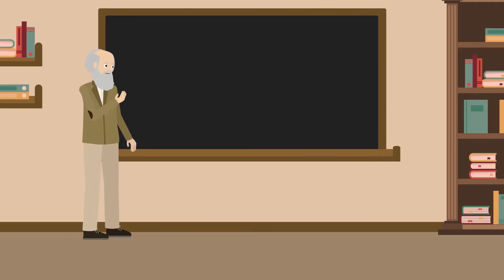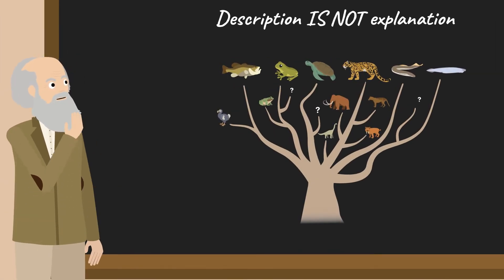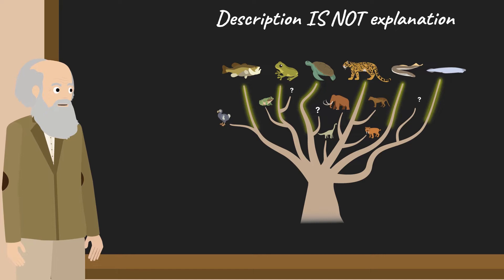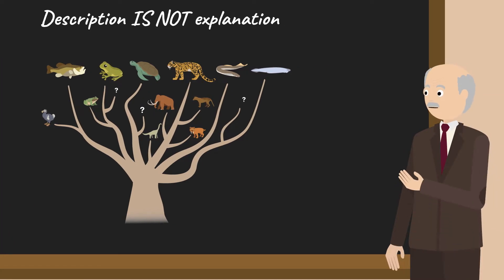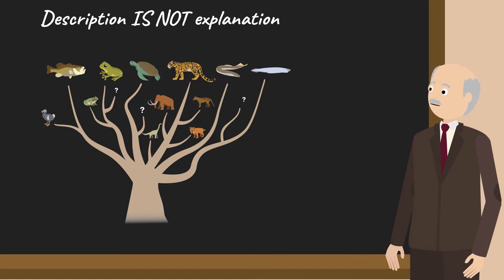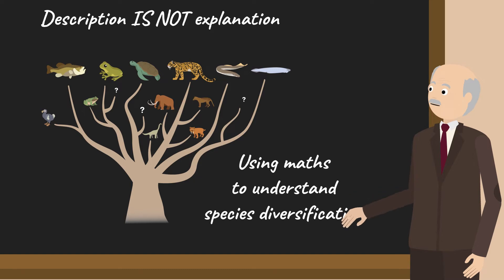The phylogenetic tree of life, however, does not explain its own evolution. Why did some branches become extinct while others flourished? Many hypotheses were proposed, but until George Andy Yule's work in the 1920s, few had been tested on phylogenetic trees. To do this, a mathematical model for evolution is required.